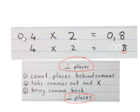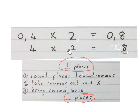So firstly, we count the places behind the comma, which was 1, and we write it down — one place. Then we take out the comma and multiply normally. We get 4 times 2 is 8. Then you bring back the comma the same amount of places that you counted in the beginning, so one place from behind. That's how this one worked.